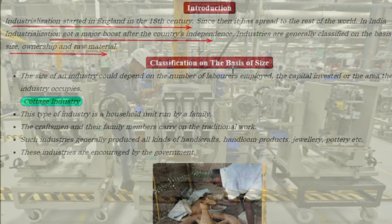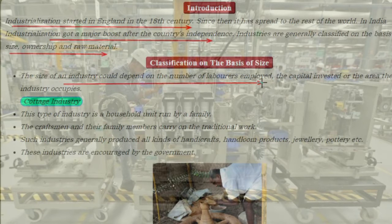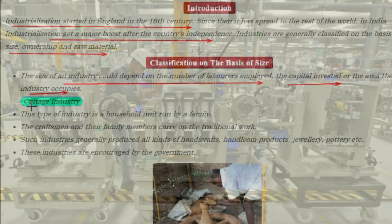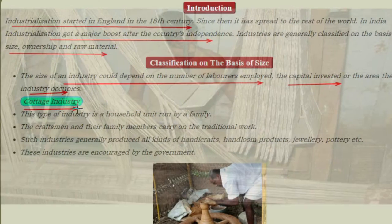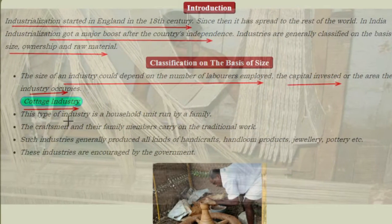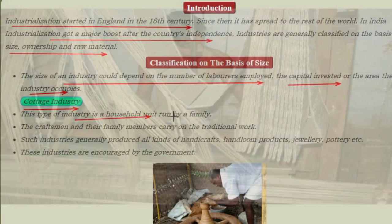Industries are generally classified on the basis of size, ownership, and raw material. Classification on the basis of size: the size of an industry could depend upon the number of laborers employed, the capital invested, or the area the industry occupies.